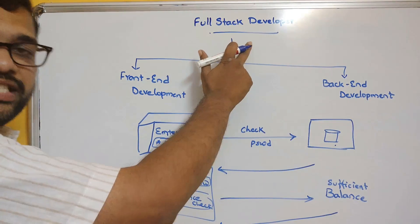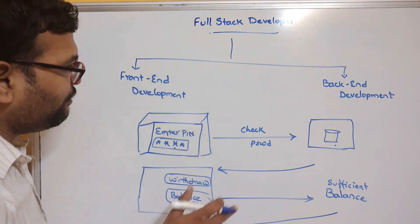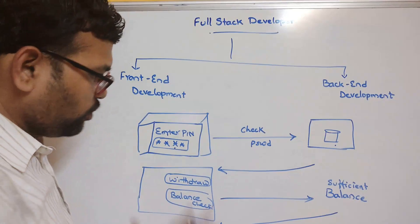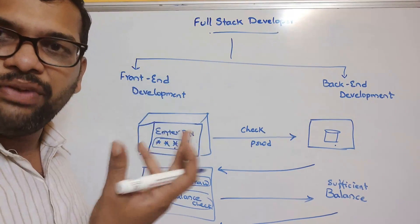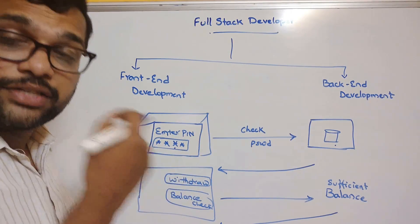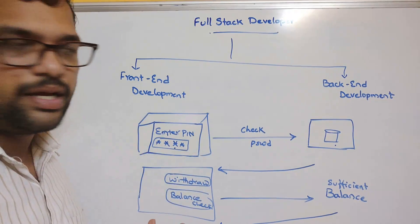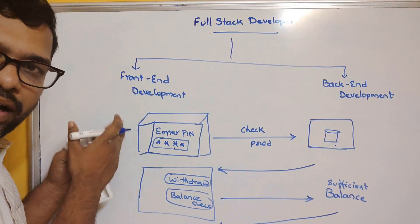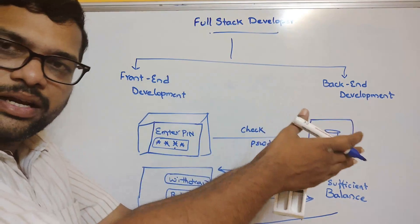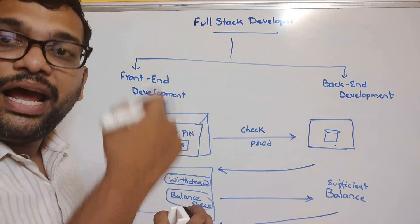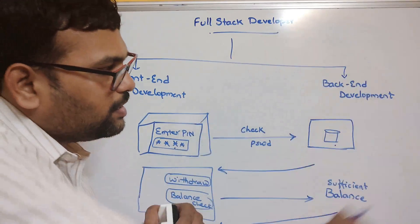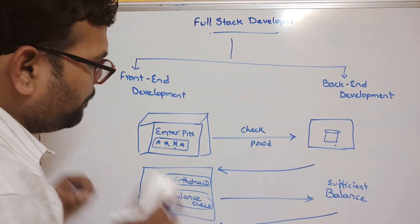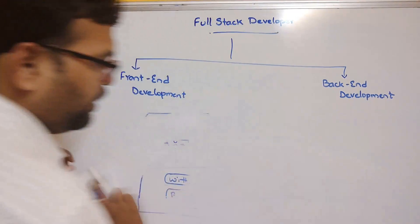If you want to become a full-stack developer, you must be able to develop both front-end and back-end applications. Whatever is visible to the user is the front-end — the user interface — which is client-side. The server-side is the back-end. From the client side we send a request and the server accepts it and gives the response. Hope you got an idea about front-end and back-end.